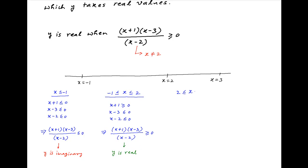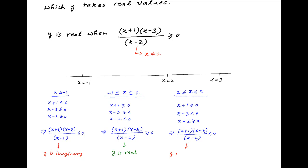Next, consider the interval when x is greater than or equal to 2 and less than or equal to 3. x + 1 is greater than or equal to 0, x - 3 is less than or equal to 0, and x - 2 is greater than or equal to 0 in this interval. Therefore, the value of (x + 1)(x - 3) divided by (x - 2) is less than or equal to 0 in this interval, and so y is imaginary when 2 ≤ x ≤ 3.